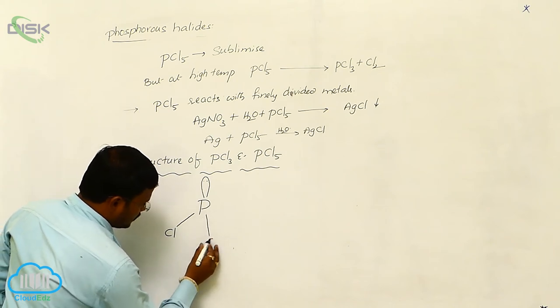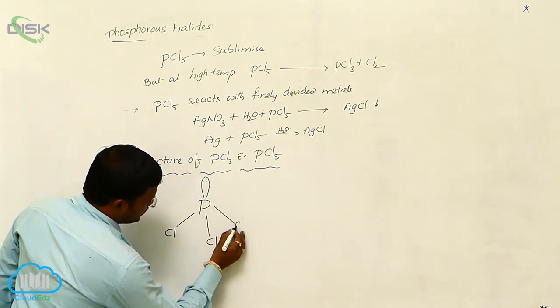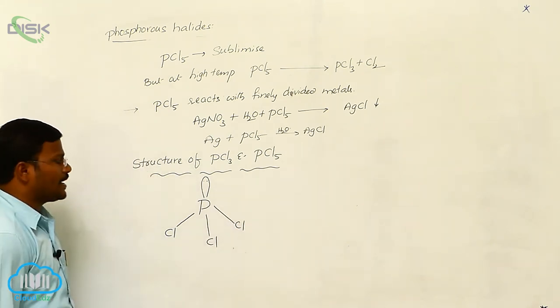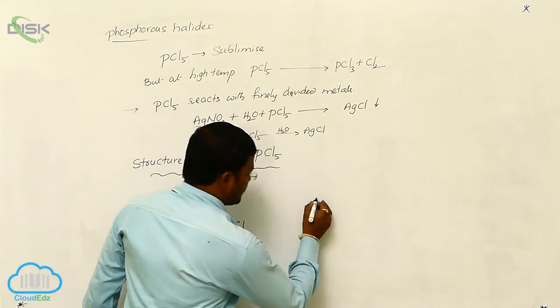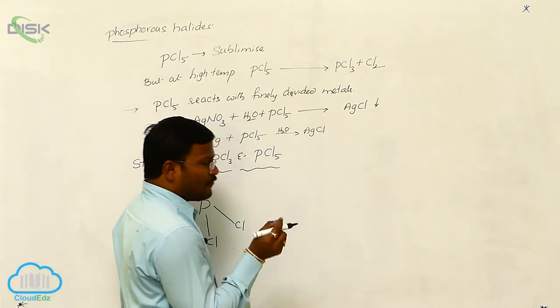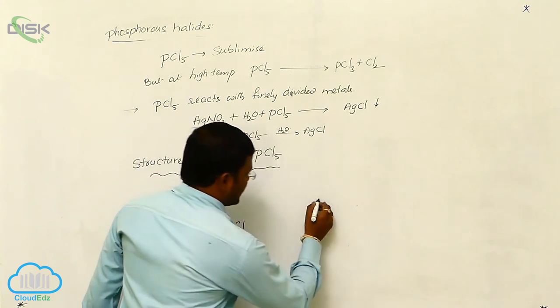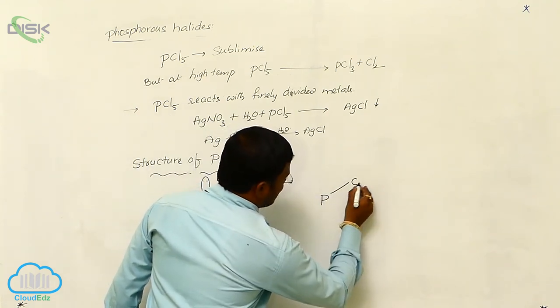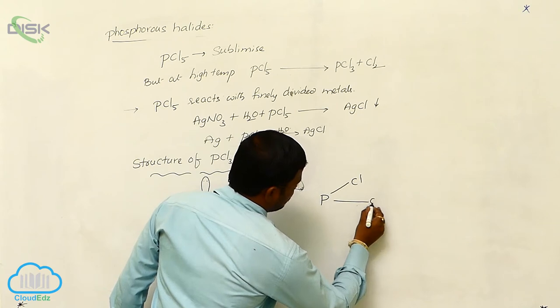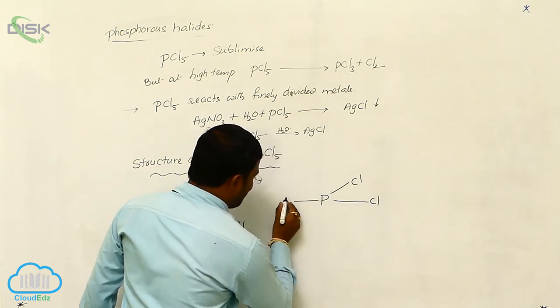This is the pyramidal geometry of phosphorus trichloride. Whereas in liquid state and gaseous state, phosphorus pentachloride will have trigonal bipyramidal geometry.